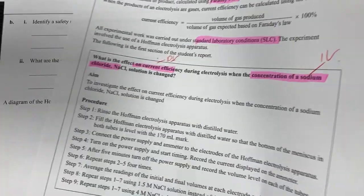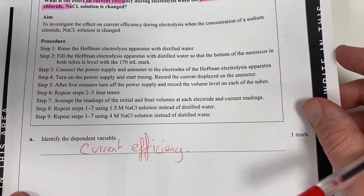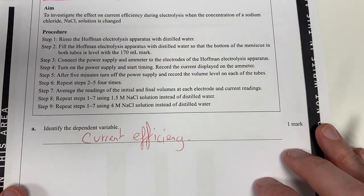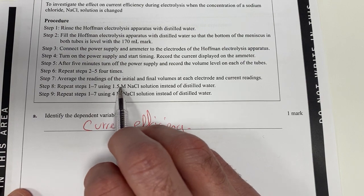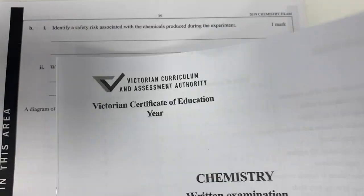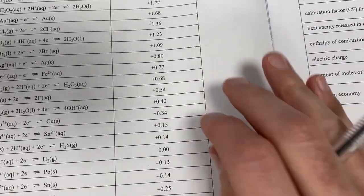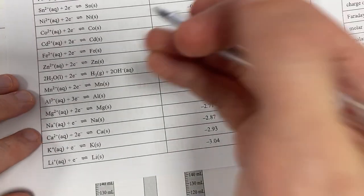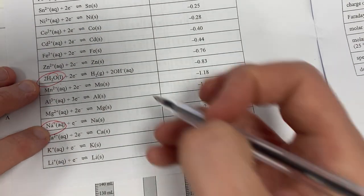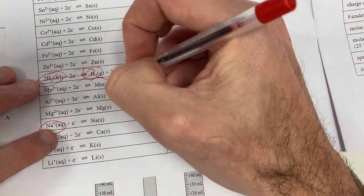Identify a safety risk associated with the chemicals produced during the experiment. I'm electrolyzing sodium chloride, a relatively weak solution. So let's see what is happening on my electrochemical series. I'm going to have sodium and water, so this is going to be my strongest oxidant. I'm going to produce hydrogen. That's a safety hazard straight away.